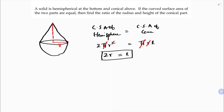If the curved surface areas of the two parts are equal, we need to find the ratio of radius and height. We have l = 2r and radius = r. We calculate h by applying the Pythagorean theorem: l² = h² + r².